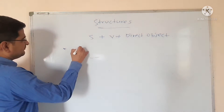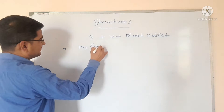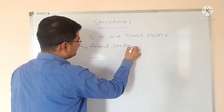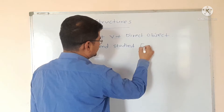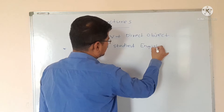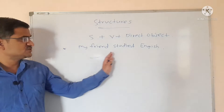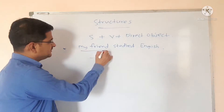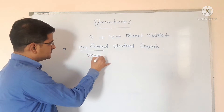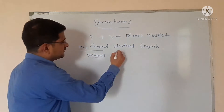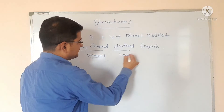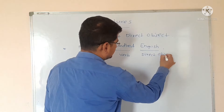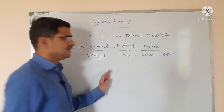My friend studied English. In this particular statement, 'my friend' is the subject, 'studied' is the verb, and 'English' is the direct object.